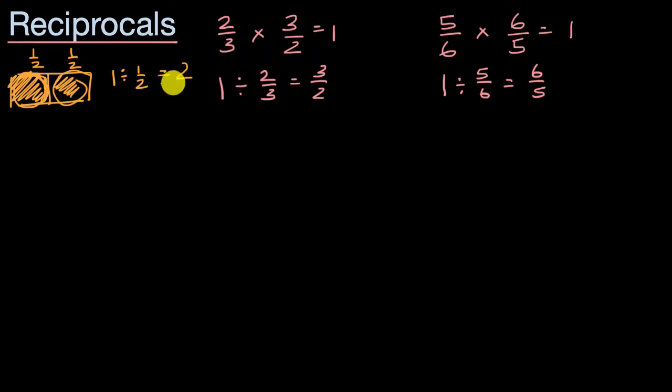Now you might be saying, wait, two doesn't look like I just swapped the numerator and the denominator, but you have to realize that two is the same thing as two wholes. So the reciprocal of 1/2 is indeed two over one. Or if you take two over one, or if you have two 1/2, that is indeed going to be equal to one.